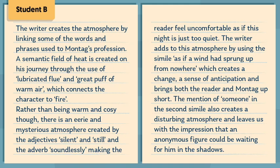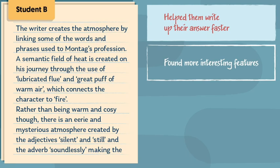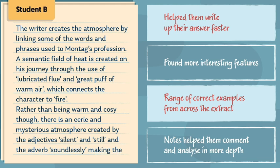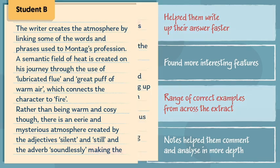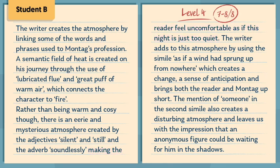Spending more time thinking and planning has worked well for this student, and it may well have helped them write up their answer faster too. They've found more interesting features and used more of a range of correct examples from across the extract. Making notes has helped them comment and analyse in more depth. Their development in the second paragraph in particular shows how one perceptive comment about the effect on the reader lifts them into the top level, and as a result, their answer would earn them a level 4.